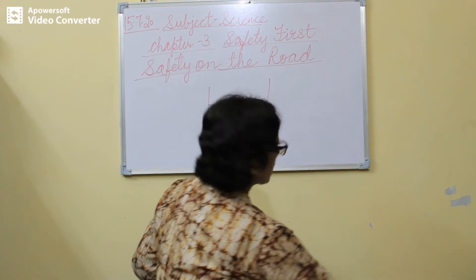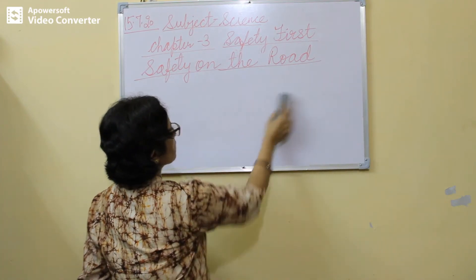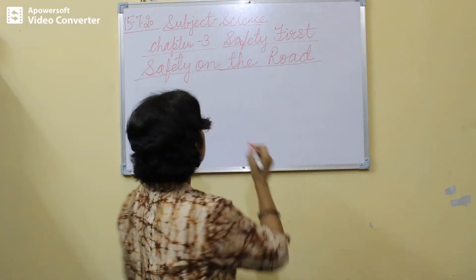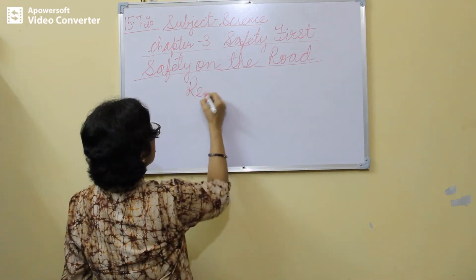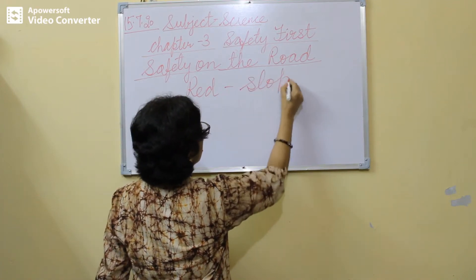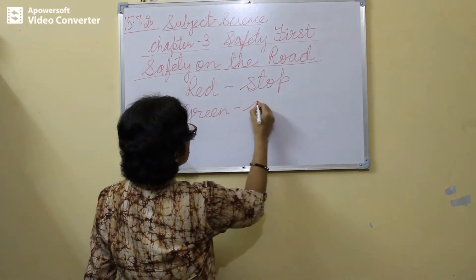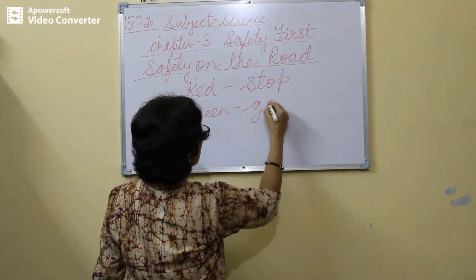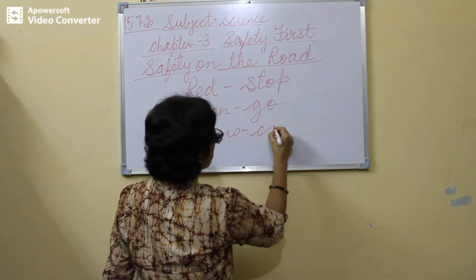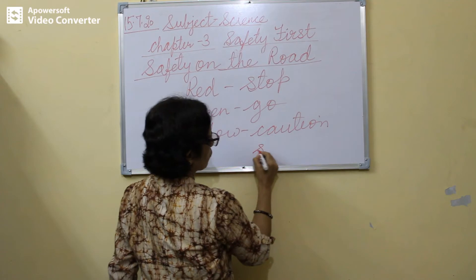At traffic signals you will see red, green, and yellow lights. Red light means stop, green light means go, and yellow light means caution — we can also say slow down.